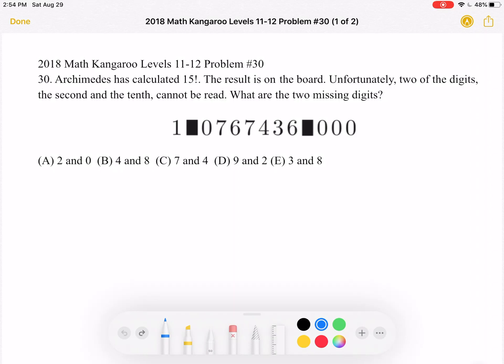A: 2 and 0. B: 4 and 8. C: 7 and 4. D: 9 and 2. Or E: 3 and 8.